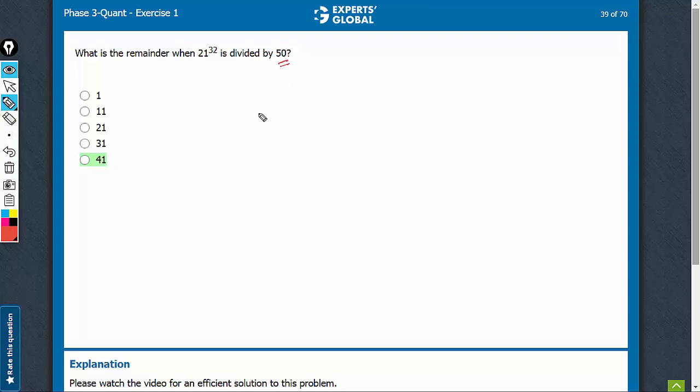Remainder with 50 would be about finding the last two digits. The remainder of the last two digits with 50 would be the remainder overall.